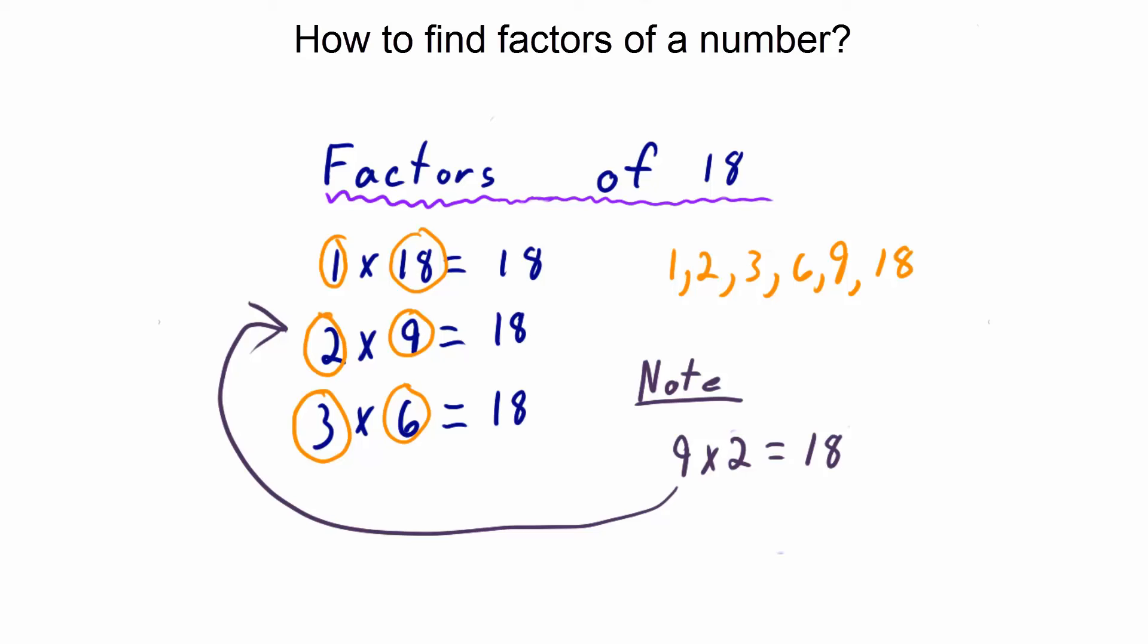This is also true for 18 times 1 and 6 times 3. There's no need for it. No need to repeat yourself. Well, that's pretty much it. Factors are numbers or quantities that are multiplied together to give us a product.